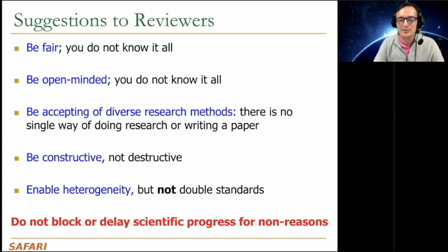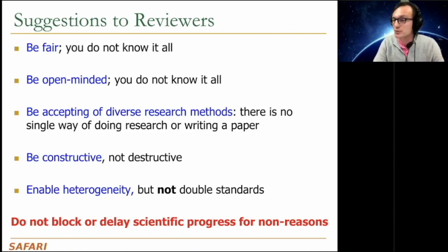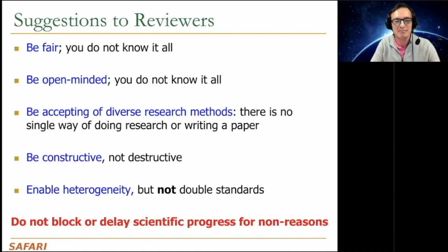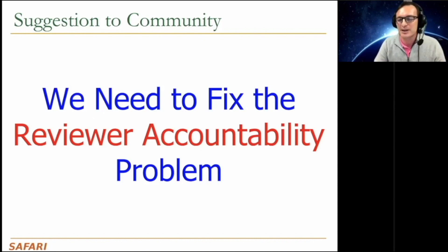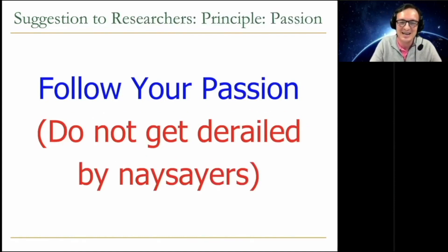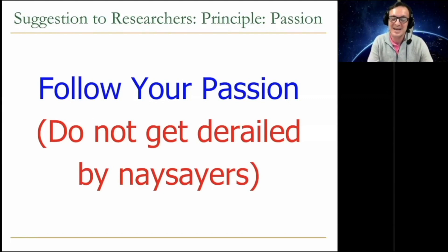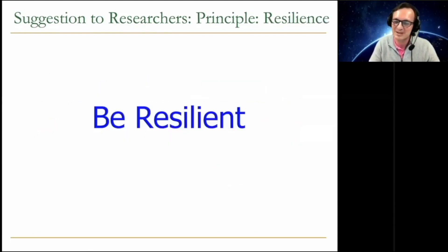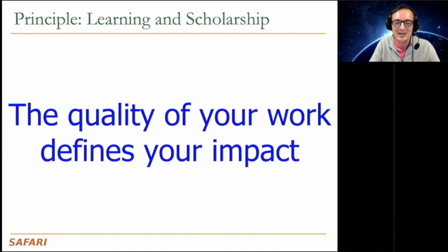I think we should also be heterogeneous — not all ideas are equal. Some ideas require 20 pages, some ideas require two pages. Having very strict rules is not good in general. We need to fix the reviewer accountability problem — we have a big problem affecting the impact of our community going into the future. But I will end with a positive note: all researchers, young and old, should follow their passion. Don't get derailed by naysayers. We should be resilient, and as long as we focus on learning, scholarship, and quality, hopefully our work will have impact in the field.